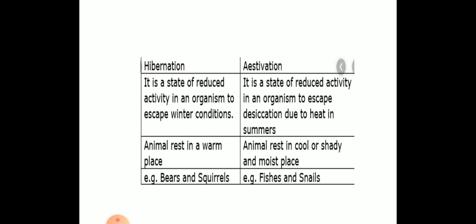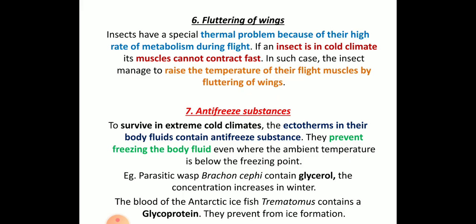This is the difference between hibernation and estivation — for two marks give a brief answer, but for seven or five marks, write in detail. Next, fluttering of wings. This mainly happens in insects and birds. Insects have special thermal problems since their movement is very fast, giving them a high metabolic rate during flight. During cold climates, flight muscles cannot contract fast enough, so before and after flight, insects flutter their wings rapidly to raise body temperature and activate their flight muscles.